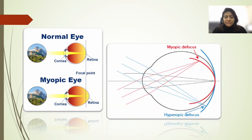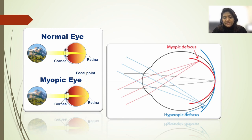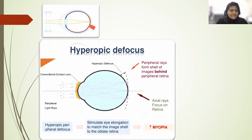What happens to the rays falling on the peripheral retina? If rays fall in front of the retina there is myopic defocus, and if rays fall behind the retina there is hyperopic defocus. When myopia is corrected with regular spectacles or contact lenses, the central rays fall on the retina and are in focus, whereas the peripheral rays fall behind the retina, causing hyperopic defocus on the peripheral retina. This hyperopic defocus acts as a stimulating factor for eye elongation, thereby increasing myopia progression.